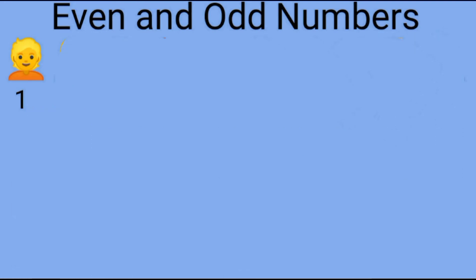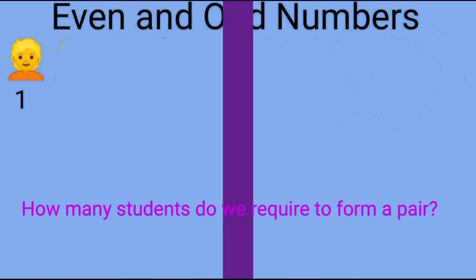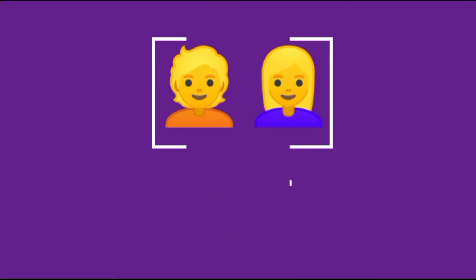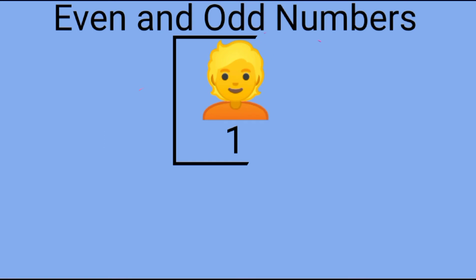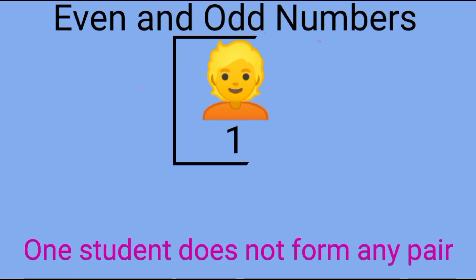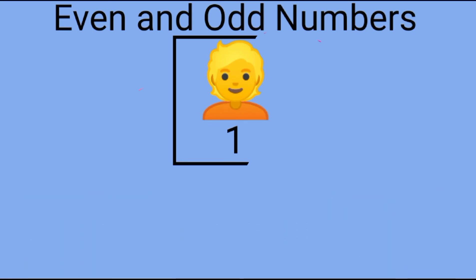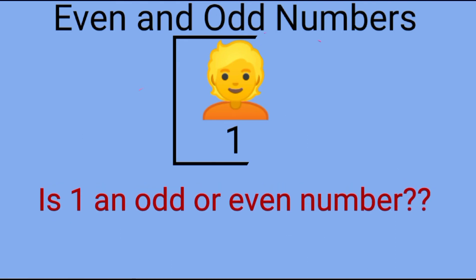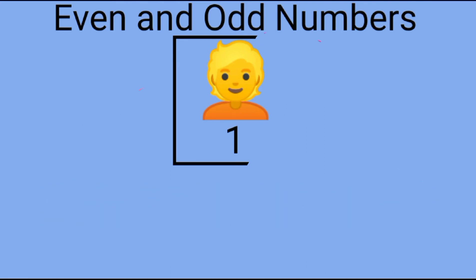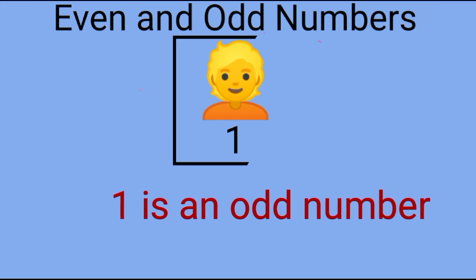Tell me children, what happens when only one student stands in the class? How many students do we require to form a pair? Yes, we require two students. So can we form a pair with only one student? No, one student does not form any pair. Then tell me children, is one an odd or even number? Yes, one is an odd number.